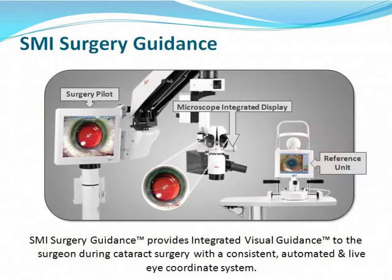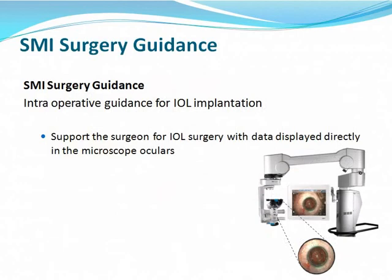Here you have a setup of the SMI surgery guidance system, where you have the reference unit that measures the astigmatism before surgery using typical landmarks of the eye in terms of iris features and limbal vessels. This is then loaded into the surgery pilot, and through the microscope-integrated display, the surgeon gets this view in the microscope oculars. The idea of SMI surgery guidance is that it helps the surgeon with guidance for intraocular lens implantation in terms of centration of lenses, multifocal lenses, and alignment of toric intraocular lenses.